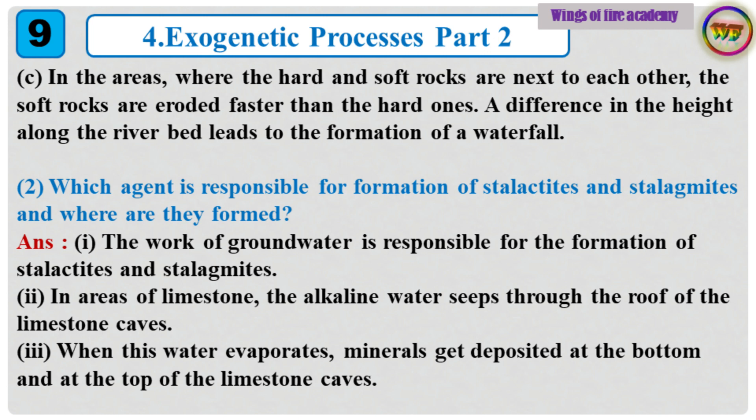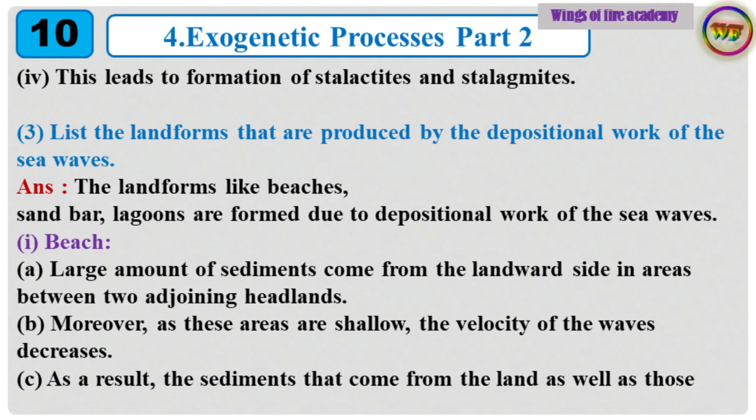2. Which agent is responsible for the formation of stalactites and stalagmites and where are they formed? Answer: The work of groundwater is responsible for the formation of stalactites and stalagmites. In areas of limestone, the alkaline water seeps through the roof of the limestone caves. When this water evaporates, minerals get deposited at the bottom and at the top of the limestone caves. This leads to the formation of stalactites and stalagmites.